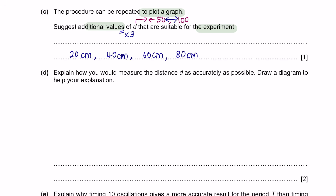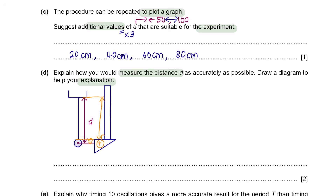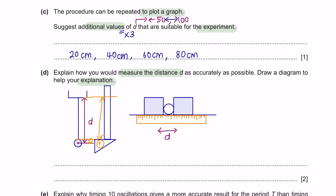Part D. Explain how you would measure the distance d as accurately as possible — draw a diagram to help your explanation. As shown in figure 1.1, the distance includes the length of the string and the radius of the ball. To measure the string length, place a set square on a ruler in a perpendicular position and get the reading. Using two blocks, measure the diameter of the ball with a ruler, then divide by 2 to get the radius, and add it to the string length.